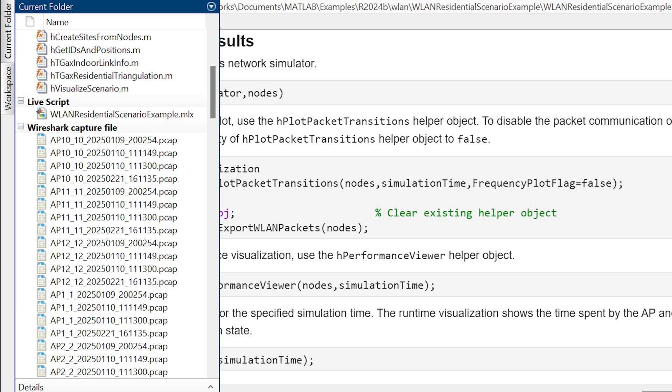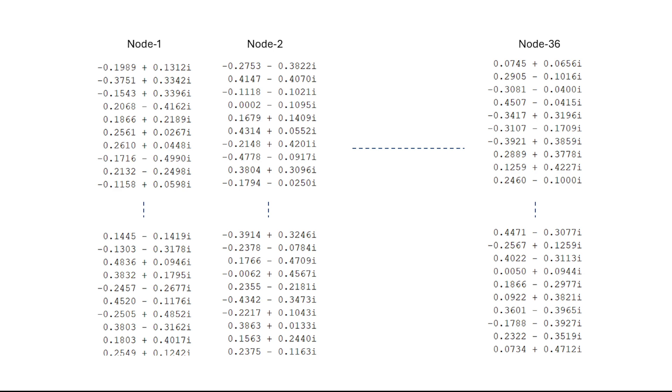We can save packets exchanged within the network and export them to other applications, like Wireshark, for further analysis and visualization. Plus, we can capture IQ samples for each node, which is valuable for post-processing and AI for wireless applications.